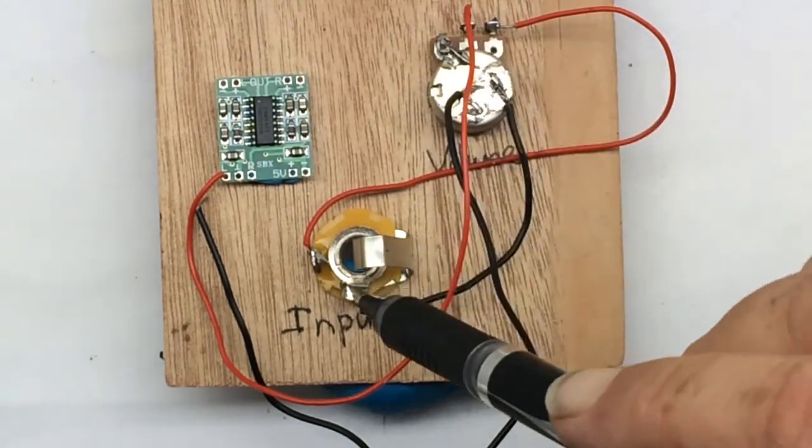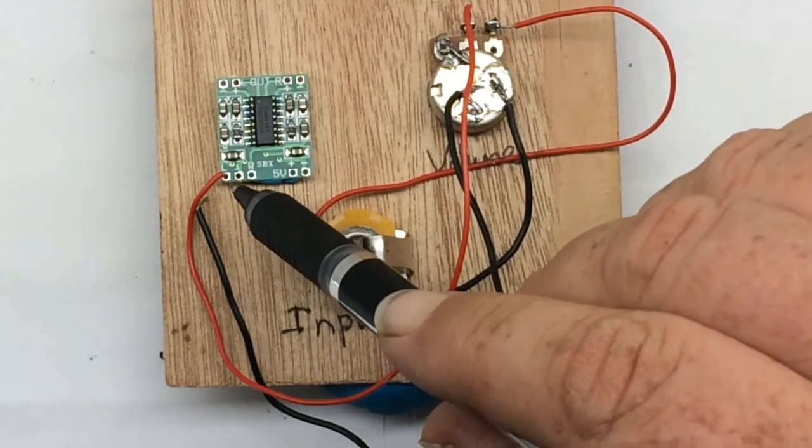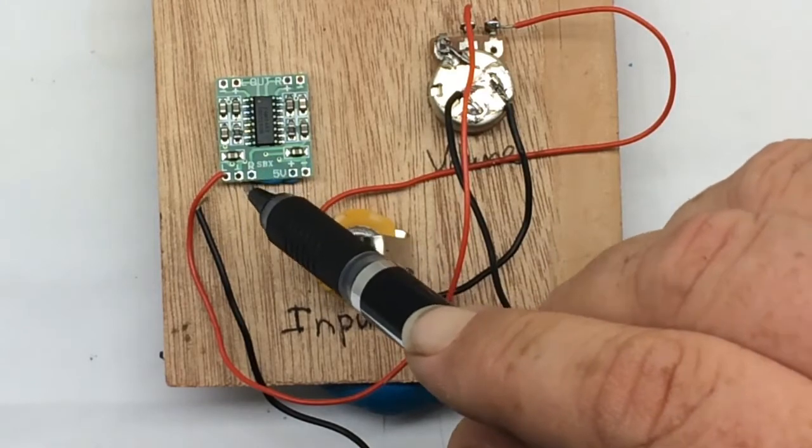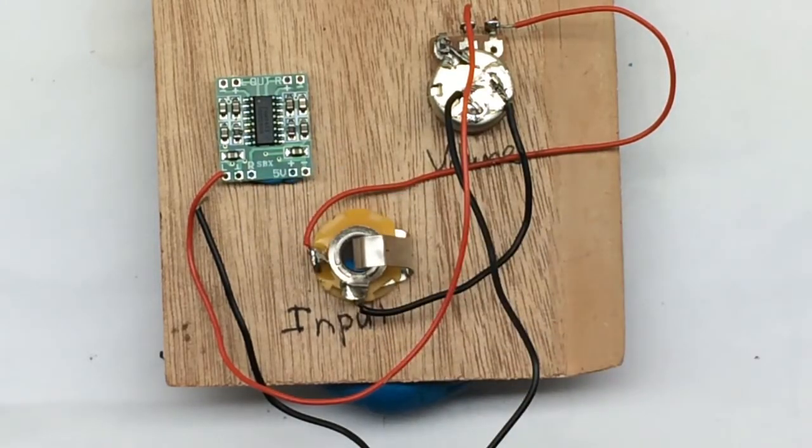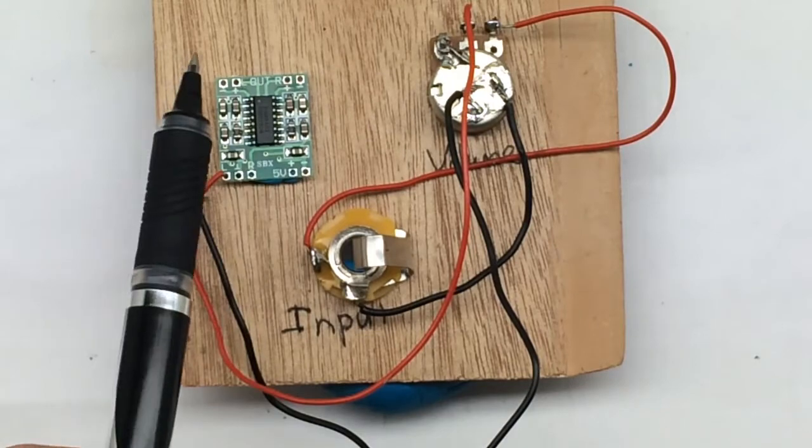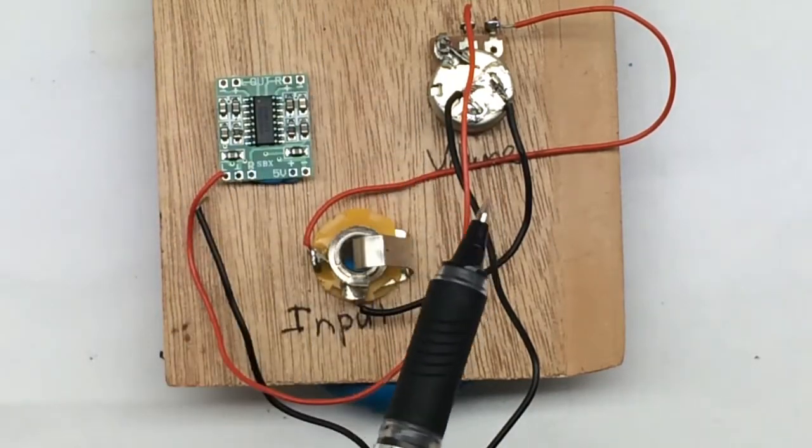Now the right hand lug is the input, so therefore the center lug is the output. We're going to run the output around to the left channel of the amplifier. You can bridge this on its way in so you can use both sides of the amplifier to output to two speakers.